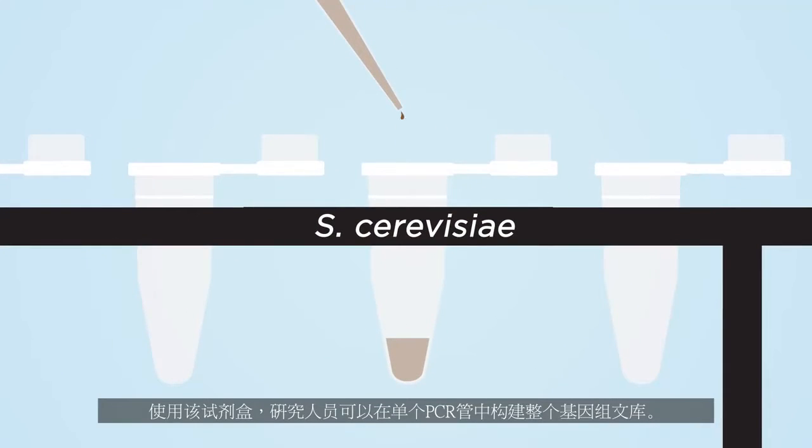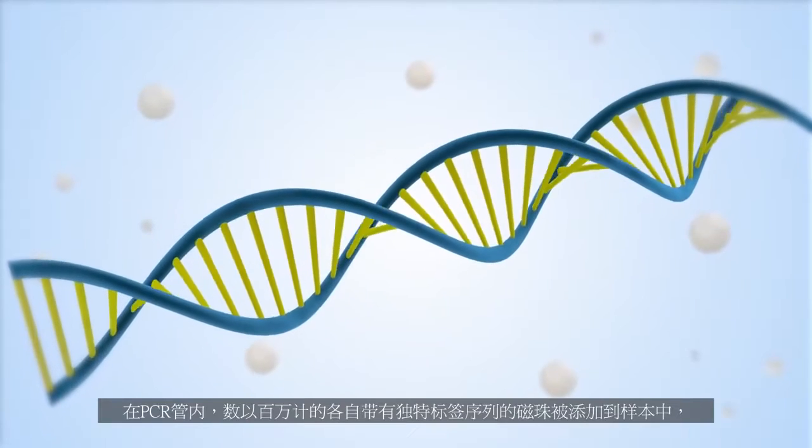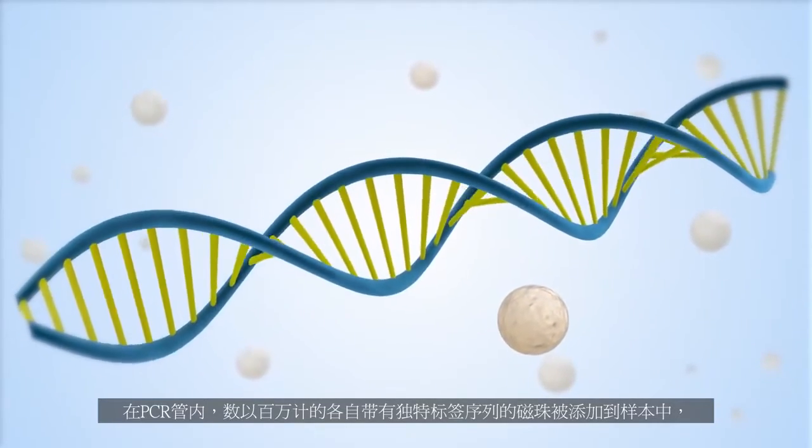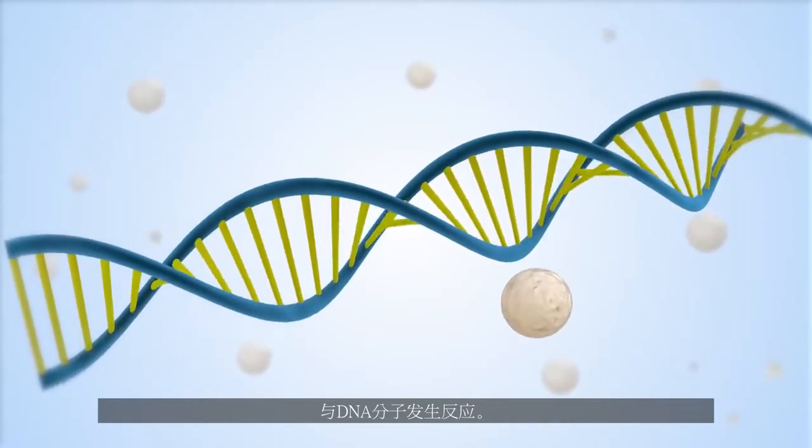Using this kit, researchers can build an entire genomic library in a single PCR tube in under three hours. Inside the PCR tube, several millions of clonally barcoded magnetic beads are added to the sample and react to the DNA molecules.